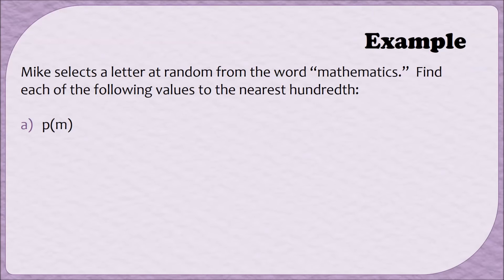To find this probability, we need to find first how many times does the letter M appear, and second, how many different letters are used. When I look at the word mathematics, there are two instances of the letter M, so that will form the numerator of my probability. To find the denominator, I need to find the total number of letters in the word mathematics. When I find the total number of letters, I don't mean the total number of unique letters—I'm going to count each instance of a letter, including any that get repeated.